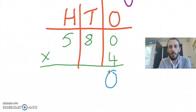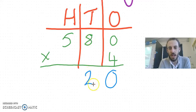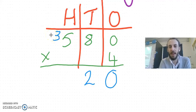When we move over to the tens, I do four multiplied by eight tens, four multiplied by eight is 32 tens. My two goes down there, my three carries along to up here.